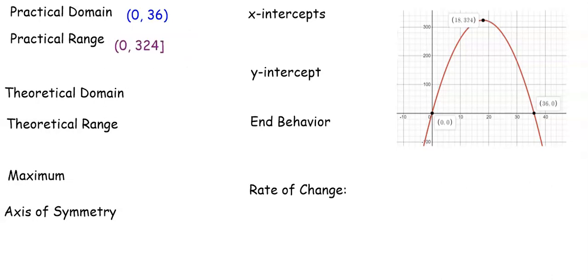The practical range are values for y that make sense in this problem. So areas for this fence would be between 0 and 324. Remember this bracket means that it would include 324, where the parentheses means that that value is not included.